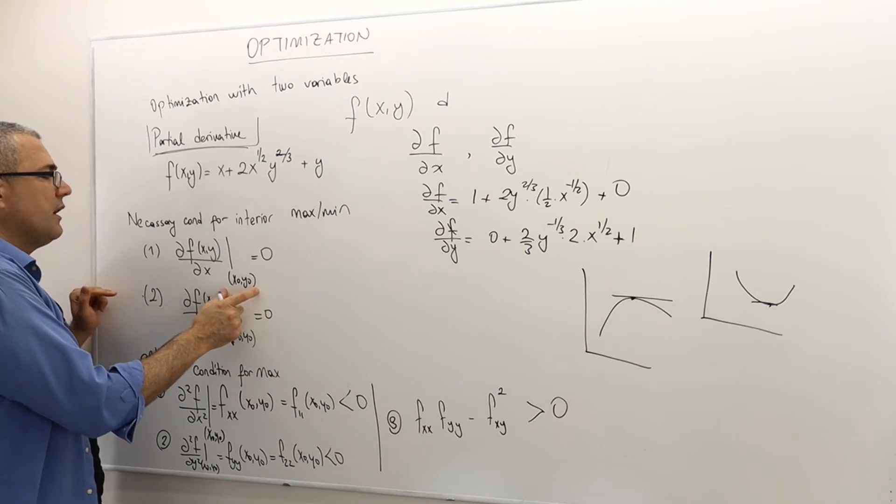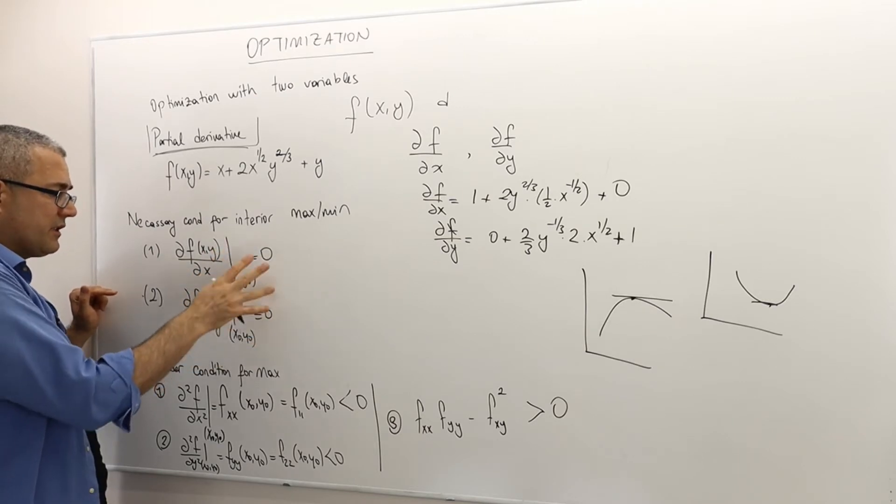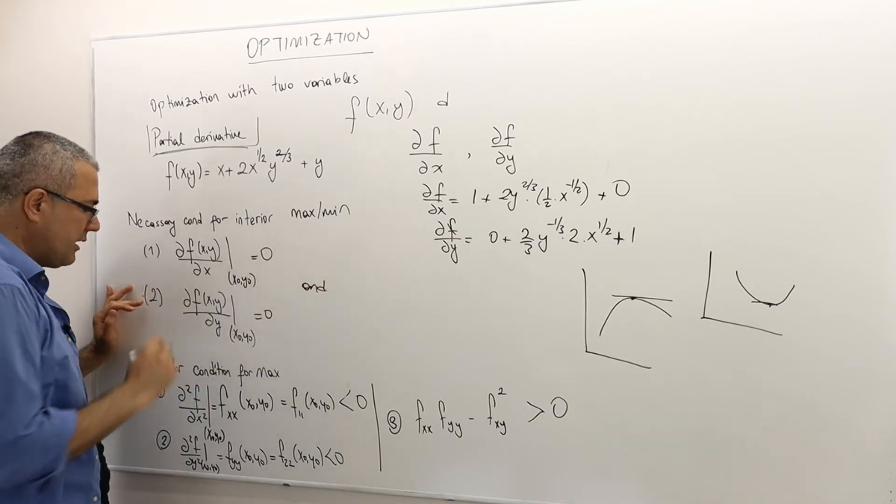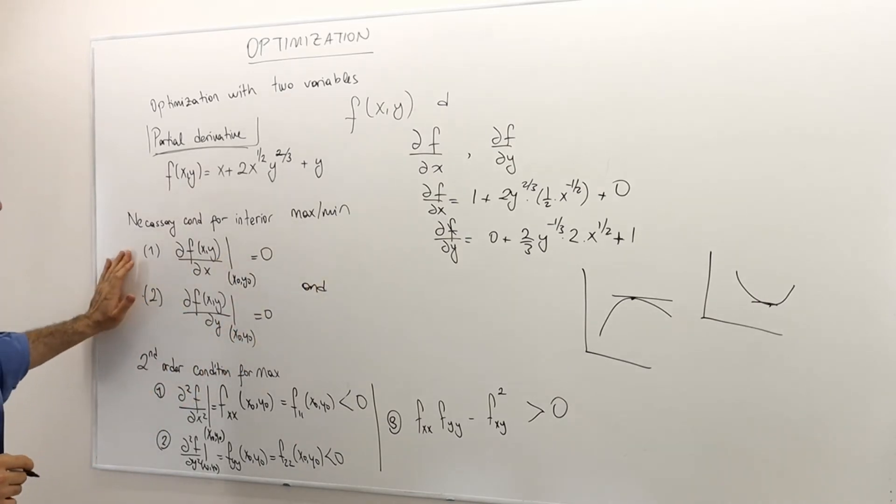So x0, y0 is a critical point if it satisfy these two conditions, both of them. Is it sufficient? No.